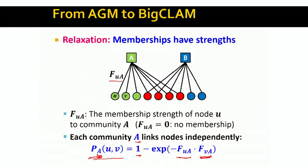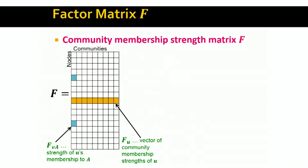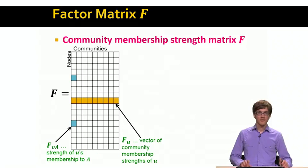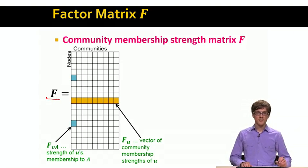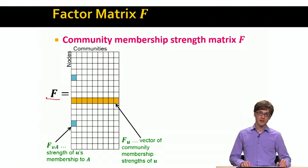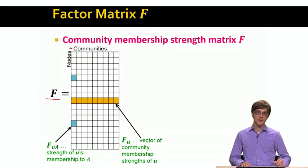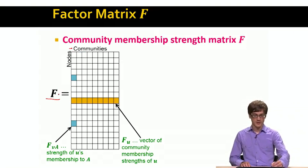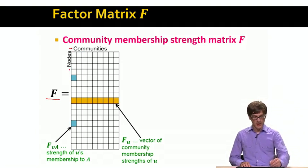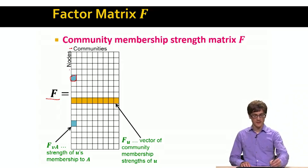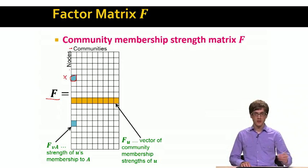Now, what happens if nodes share multiple communities? To handle this, we define the community membership strength matrix F. This matrix F has columns equal to the number of communities in our network, and rows equal to the number of nodes. Every entry tells us to what degree a given node in a given row belongs to a given community in a given column.